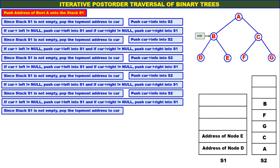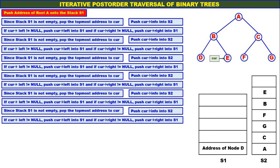Again check stack S1. Since stack S1 is not empty, pop the topmost address to CUR. Topmost address is address of node E — pop it and assign to CUR. Push CUR info into S2, so E is pushed onto stack S2. There is no left child for E — it is null, so there is no push. There is no right child for E, therefore there is no push.